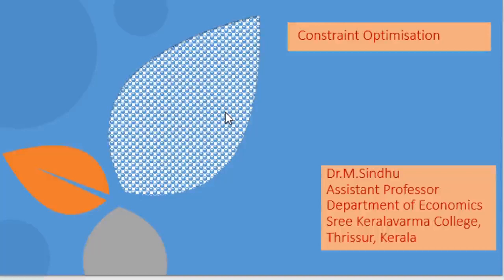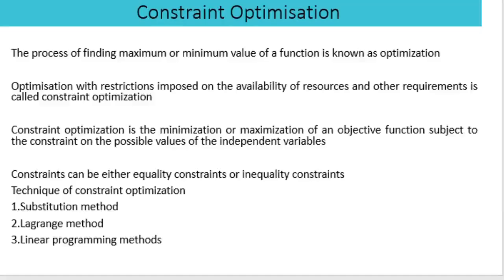In this class, we are going to discuss about constraint optimization. Optimization means the process of finding the maximum or minimum value of a function.